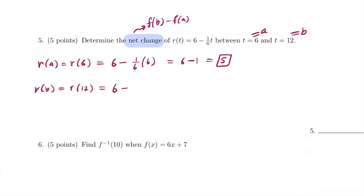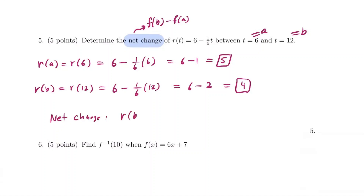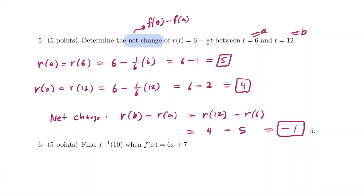Then r(12) is 6 minus 1 over 6 times 12, that's 6 minus 2, equaling 4. So the net change, using the formula r(b) minus r(a), is r(12) minus r(6), which is 4 minus 5, giving us negative 1. So our net change is negative 1.